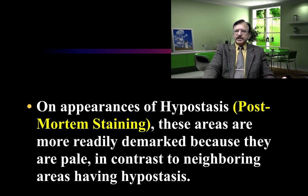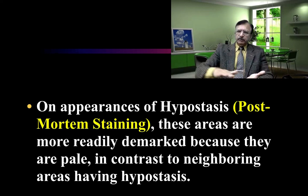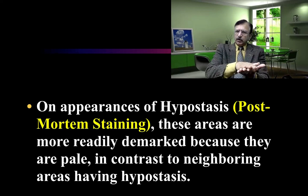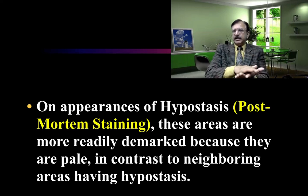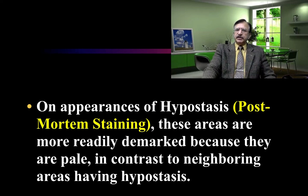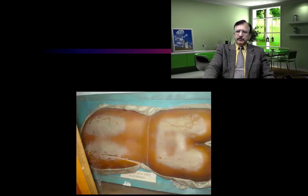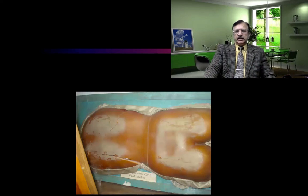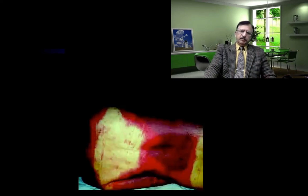On appearance of hypostasis (post-mortem staining), these areas are more readily demarcated because post-mortem staining appears in between the areas of contact flattening. The areas in contact are flattened and due to pressure, post-mortem staining will not be seen there — it is visible in the areas in between. A model shows the back of the shoulder and back of the vertex having contact flattening, with post-mortem staining visible in between.